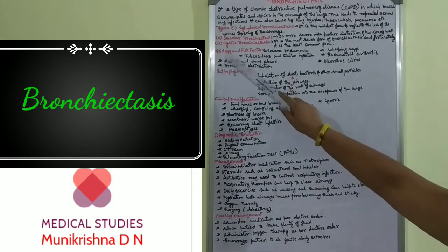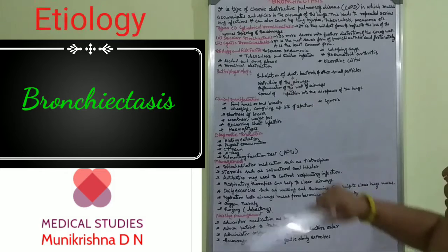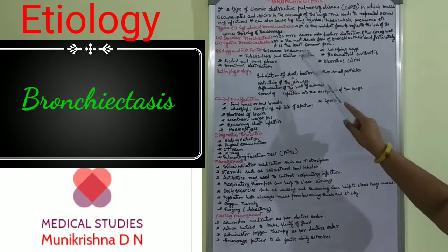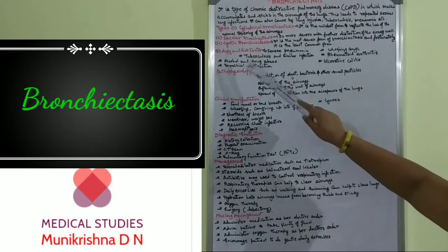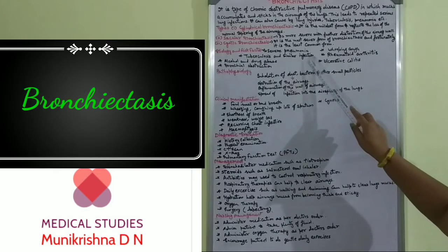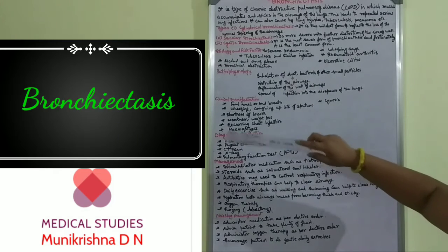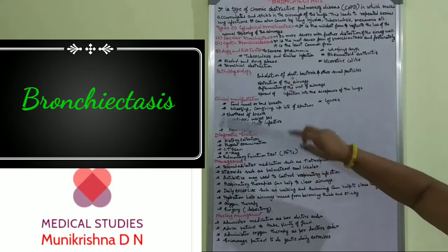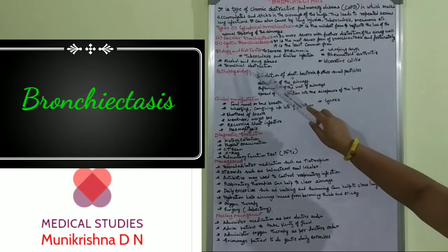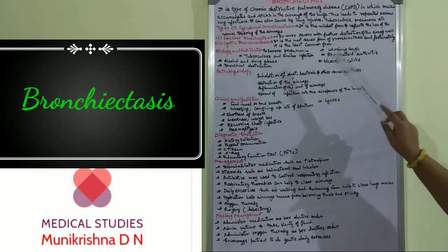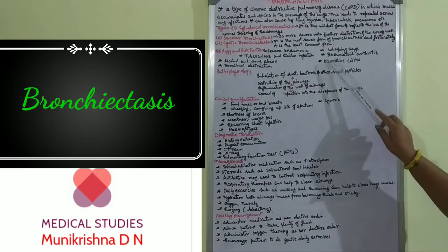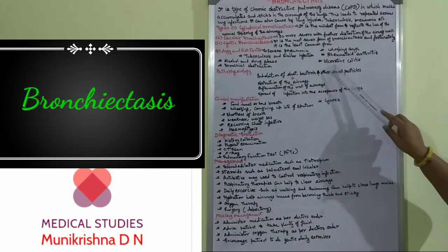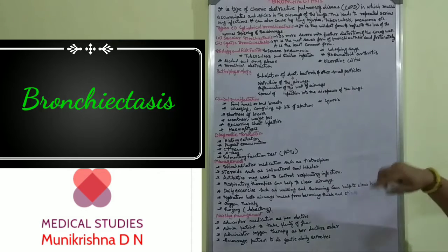Now we will see the etiology and risk factors. First: severe pneumonia. Next: tuberculosis and similar infections. Alcohol and drug abuse can cause this. Bronchial obstructions will be present. Worsening of rheumatoid arthritis and ulcerative colitis are also risk factors.